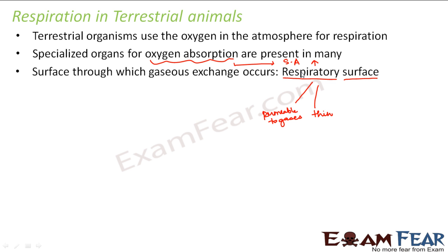Now again, for exchange of gases this organ has to be in contact with air. We are taking in oxygen which is present in the atmosphere, and lungs are the organs used for absorption of oxygen, so lungs should be in contact with air. But at the same time, since exchange of gases takes place through lungs, they are delicate organs and should be well protected inside the body. So even though this organ is present inside the body, a way should be made so that it is in contact with external air. Therefore, a tube system is implemented to carry the air from the atmosphere to that particular organ.